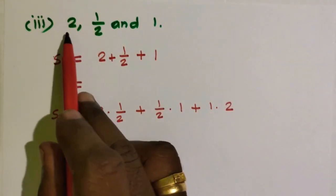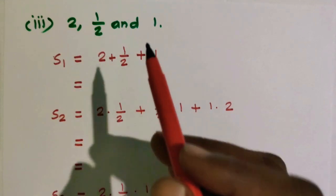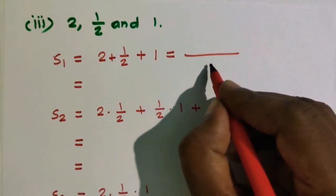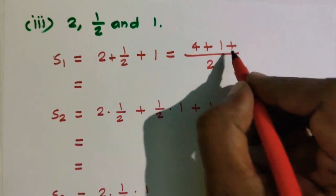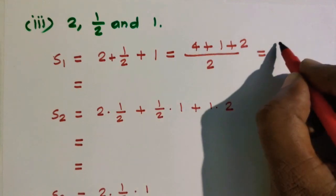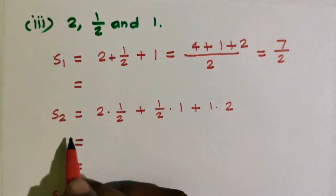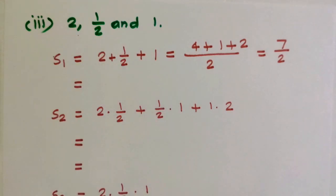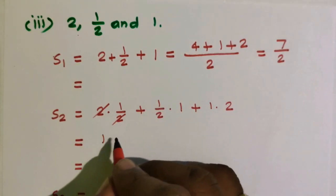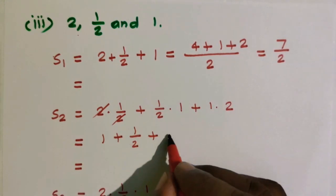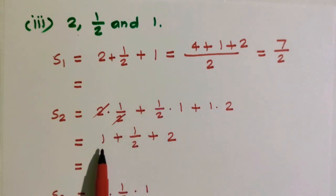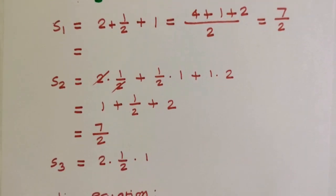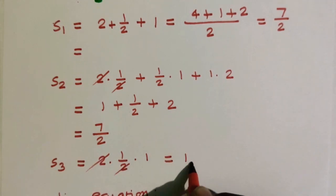Subdivision 3: roots are 2, 1/2, and 1. s1 equals sum of the roots: 2 plus 1/2 plus 1. Converting to a common denominator: 4 plus 1 plus 2, all divided by 2, which equals 7 by 2. s2 equals 2 into 1/2 plus 1/2 into 1 plus 1 into 2, which simplifies to 1 plus 1/2 plus 2, equaling 7 by 2.